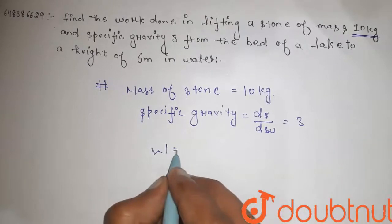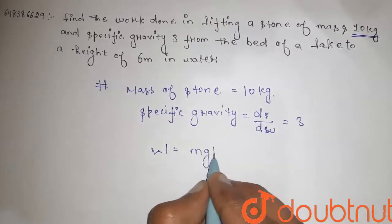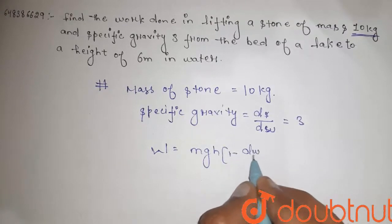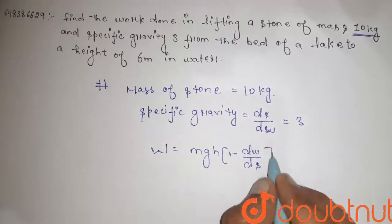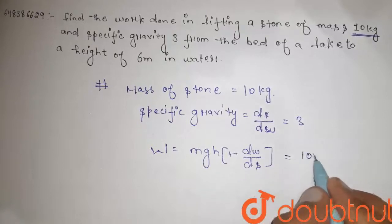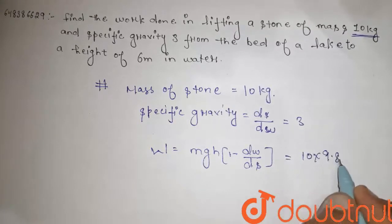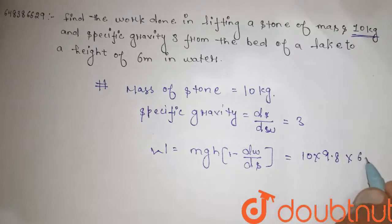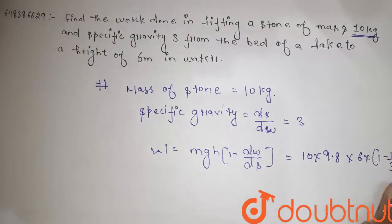So work done is equal to mgh times 1 minus dw divided by ds, which is 10 times 9.8 times 6 times 1 minus 1 by 3.